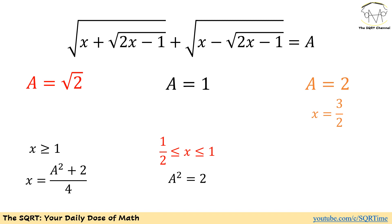On the other hand, when A is 2, you can verify that A squared is going to be 4 and then x is going to be 3 over 2, which is okay based on the condition that we had. And we have x needs to be greater than 1.